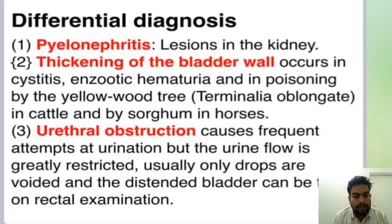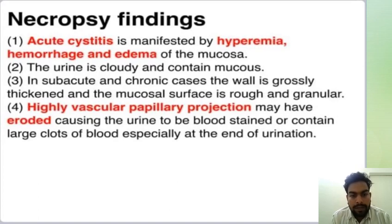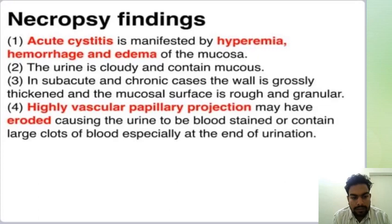Necropsy findings: acute cystitis is manifested by hyperemia, hemorrhage, and edema of the mucosa. Urine is cloudy and contains mucus. Highly vascular papillary projections may have eroded, causing the urine to be blood-stained or contain large clots of blood, especially at the end of urination.